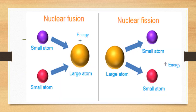In the diagram showing nuclear fission and nuclear fusion: in nuclear fusion, two small atoms — one purple and one red — join together to make a large atom, releasing a large amount of energy. In nuclear fission, a large atom is broken into smaller purple and red atoms, plus heat energy, light energy, or sound energy is also released.